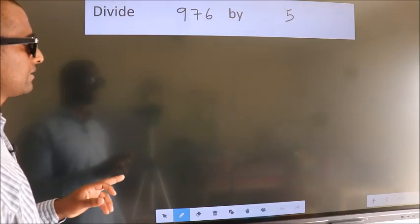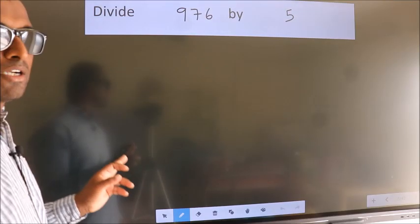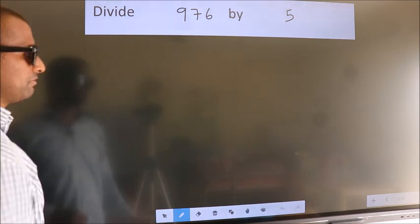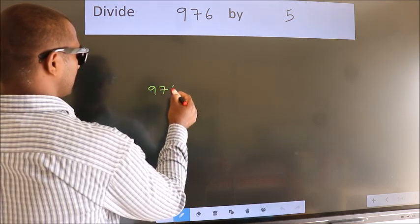Divide 976 by 5. To do this division, we should frame it in this way: 976 here, 5 here. This is your step 1.